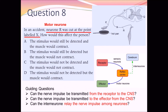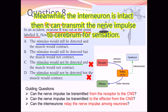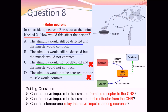In this question, only neuron R — the motor neuron — was cut and damaged. The sensory neuron and interneuron are intact and in good condition. For answers A and B, the stimulus would still be detected; for answers C and D, the stimulus would not be detected. Because neuron P is intact, the nerve impulse can still be transmitted from the receptor to the CNS. So answers C and D must be wrong — either A or B is the answer, since the stimulus would still be detected.